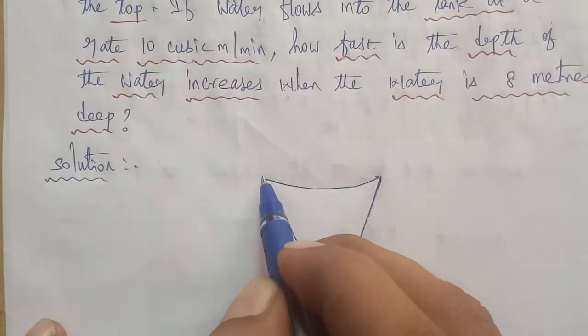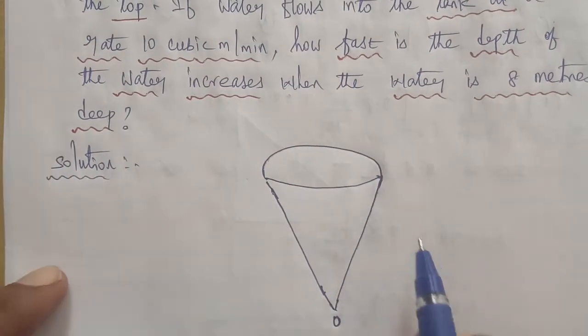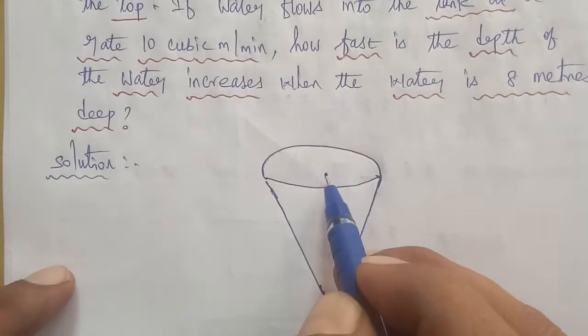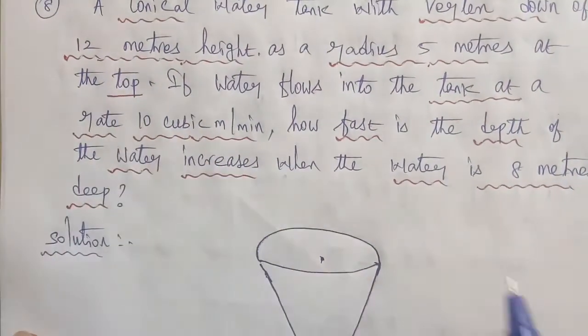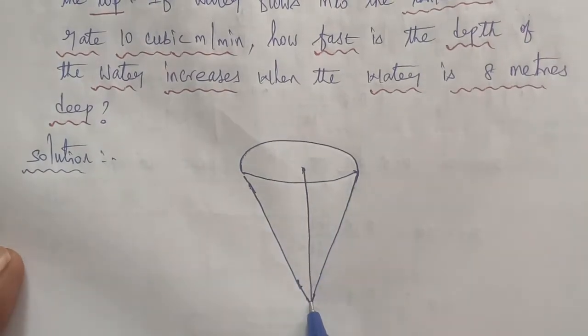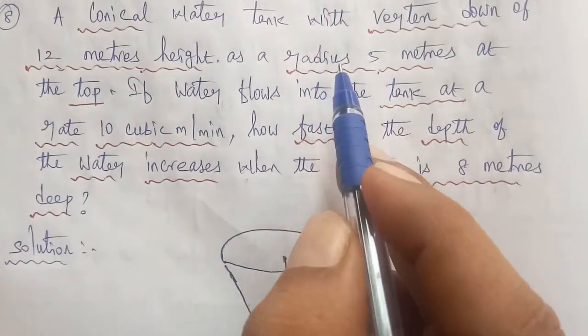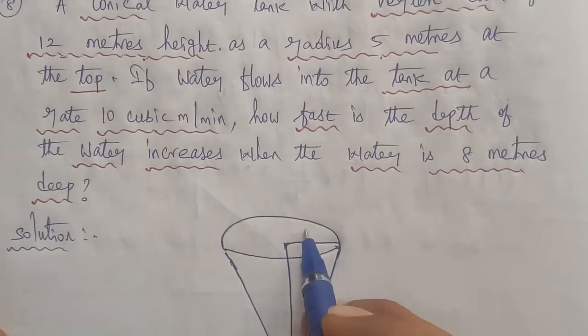It is a conical water tank. Next, the height given in the question is 12 meters. So let the height be 12 meters. Next, the radius is 5 meters. So radius 5, the radius we know. So height is 12, so the value h is equal to 12 meter.